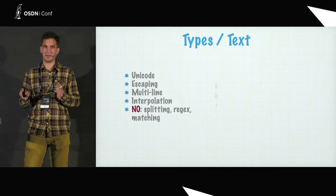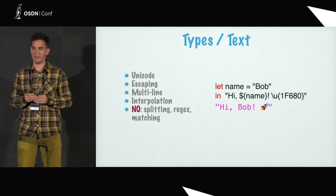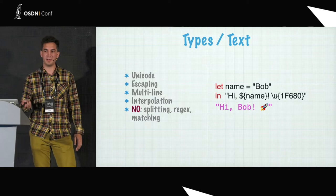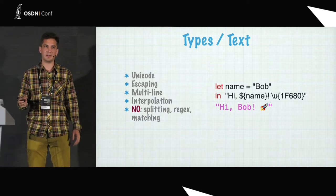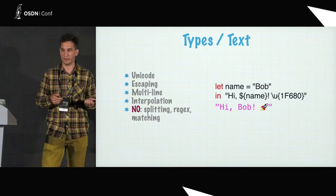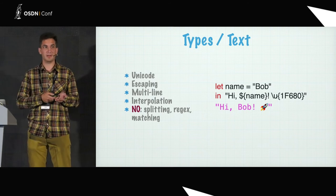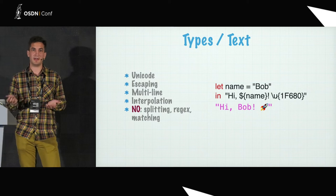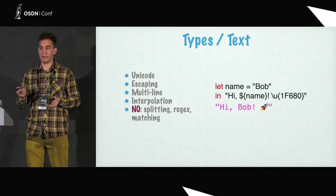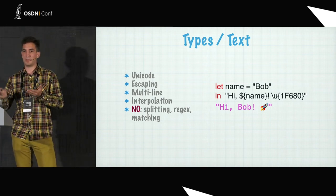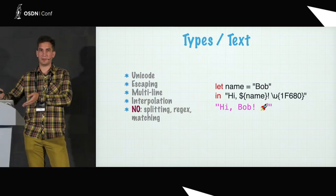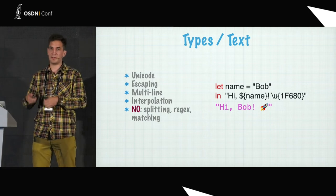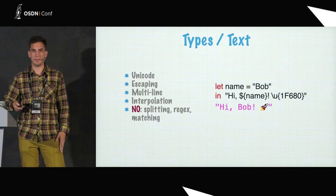I'll briefly talk about Dhall types. As an example of minimalism, there is a text type — it has Unicode, escaping, multi-line support, and allows interpolating text values into other text values. But that's basically all: it doesn't have splitting, it doesn't have regular expressions, and you cannot even compare one text value to another to check if they are the same. Still, it's very useful, and arguably it provides best practices — the best practice is to push all text expressions to the outermost bounds of your application. You should convert to text as a last resort before serializing, not before you still need to apply business logic, rules, or checks.